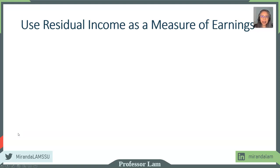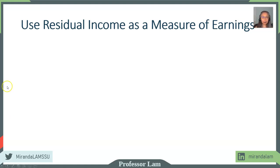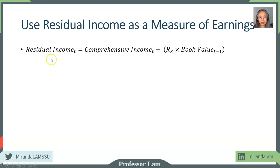So how do we apply this? First, we need to define a measure of earnings because there are many definitions — you can have EBITDA, operating income, taxable income or earnings before tax, net income, or comprehensive income. What we do is define something called residual income. Residual income is defined as comprehensive income minus the cost of equity times the book value.